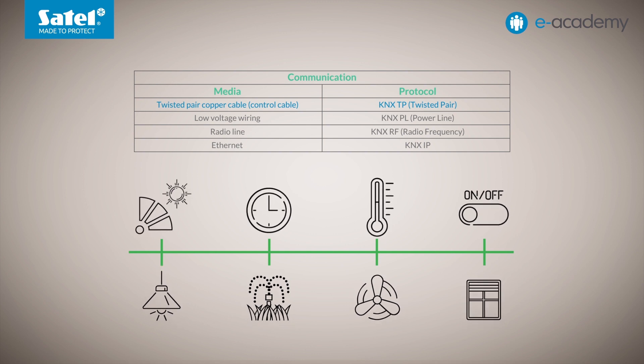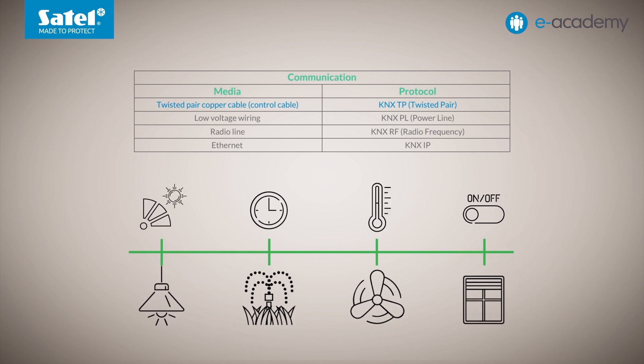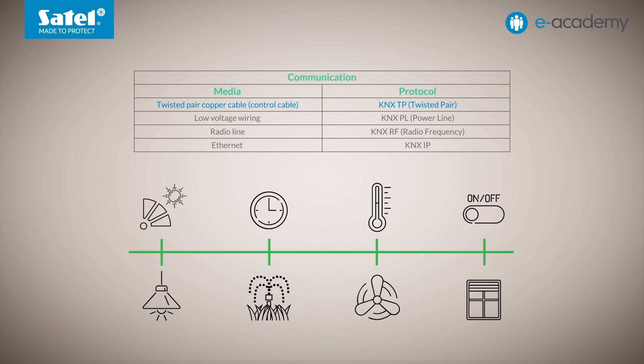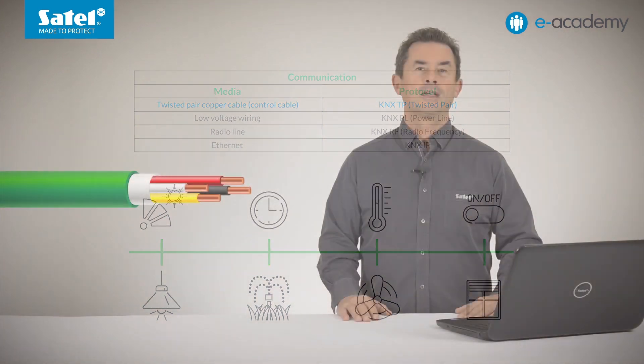Sensors are devices that receive signals from the outside. These can be, for example, simple buttons, switches, various parameter sensors, and multifunctional panels. Actuators, on the other hand, are various types of controllers that often manage the operation of numerous devices — switching, dimming, or roller shutter actuators, etc. In addition to these, the installation requires at least one power supply, but about that in a moment.